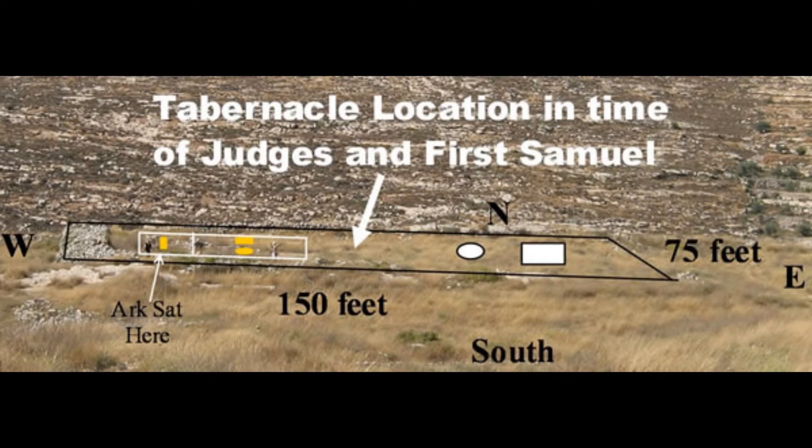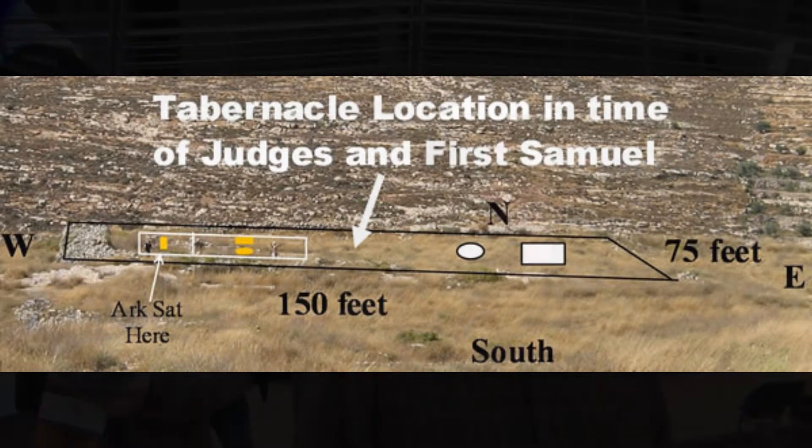This is where the story of Hannah takes place and where she brings Samuel. This is where Samuel is raised, and where Eli the priest dies when he gets word that his sons were killed in battle with the Philistines and that they captured the ark — when he hears this, he falls over and dies.